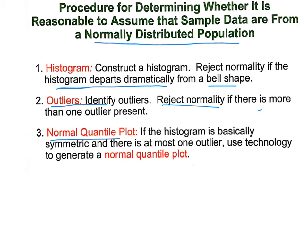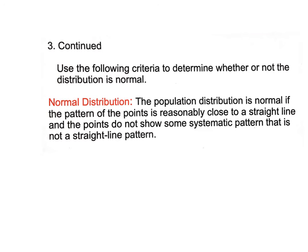We're gonna do our QQ plot. If the histogram is basically symmetric and there's at most only one outlier, we're gonna use technology to do our QQ or normal quantile plot. Once we do the QQ plot, if it's normal this is true: it's normal if the pattern of the points in your QQ plot is close to a straight line. Doesn't have to be perfect and the points do not show any other systematic pattern that's not a straight line. Like if there's a pattern that's not a straight line, then it's not normal. If it's not even close to a straight line, it's not normal. Your QQ plot needs to be reasonably close to a straight line, reasonably fairly close.